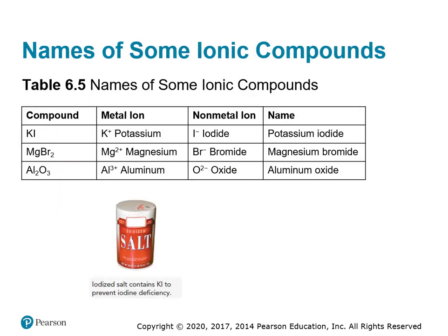Let's look at a few examples of ionic compounds. KI: K is potassium, I is iodine. So we have a potassium ion, which is our metal, and our iodide ion. Remember, as soon as it becomes an ion, its ending changes to '-ide.' We put the two together — it's potassium iodide.